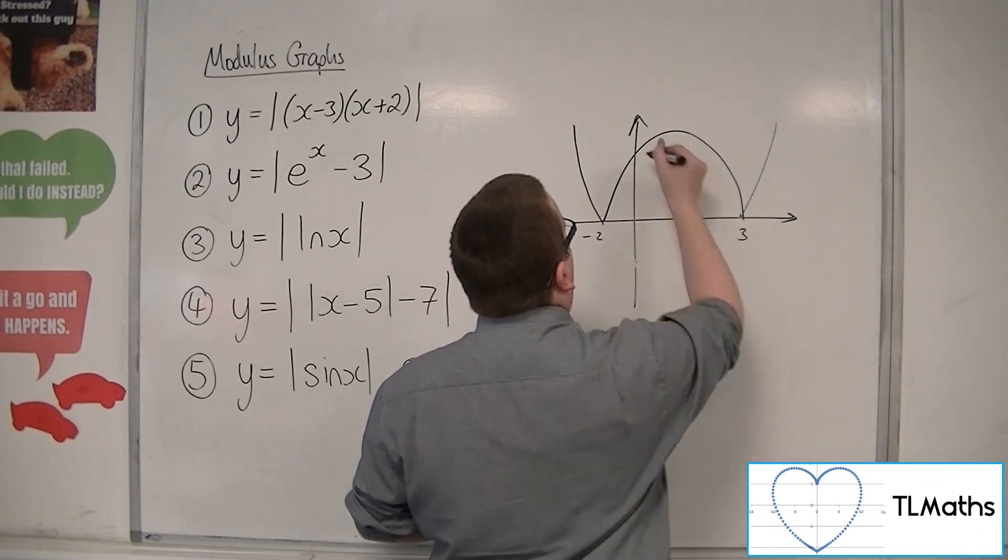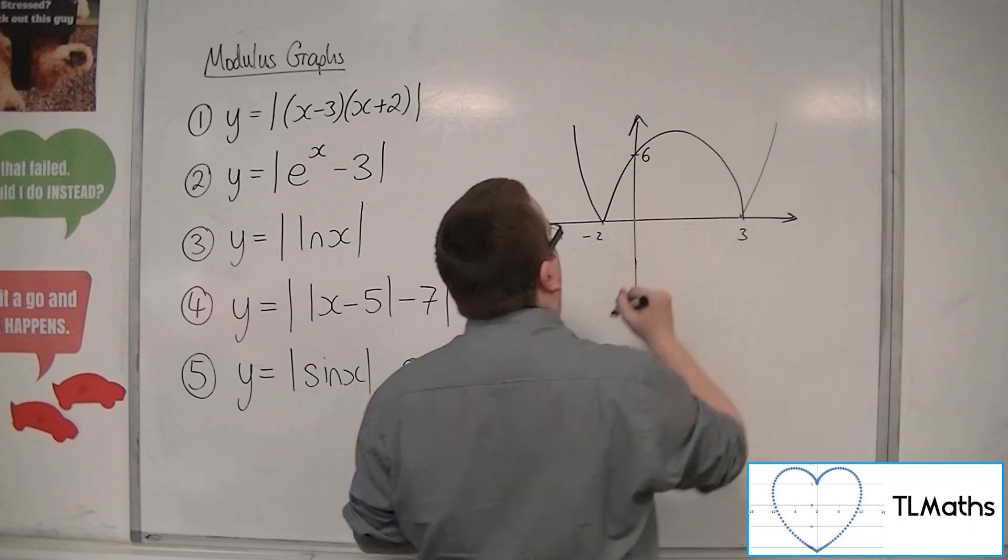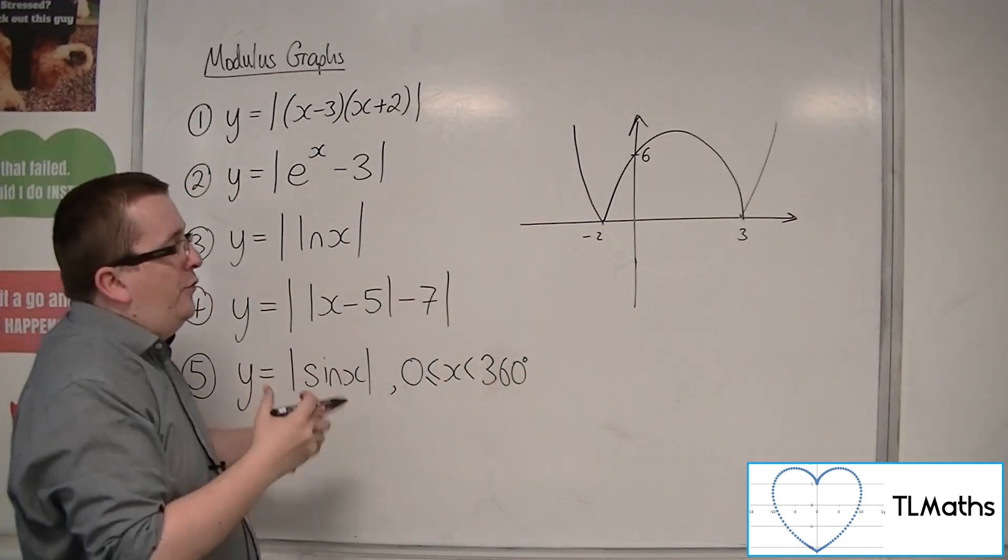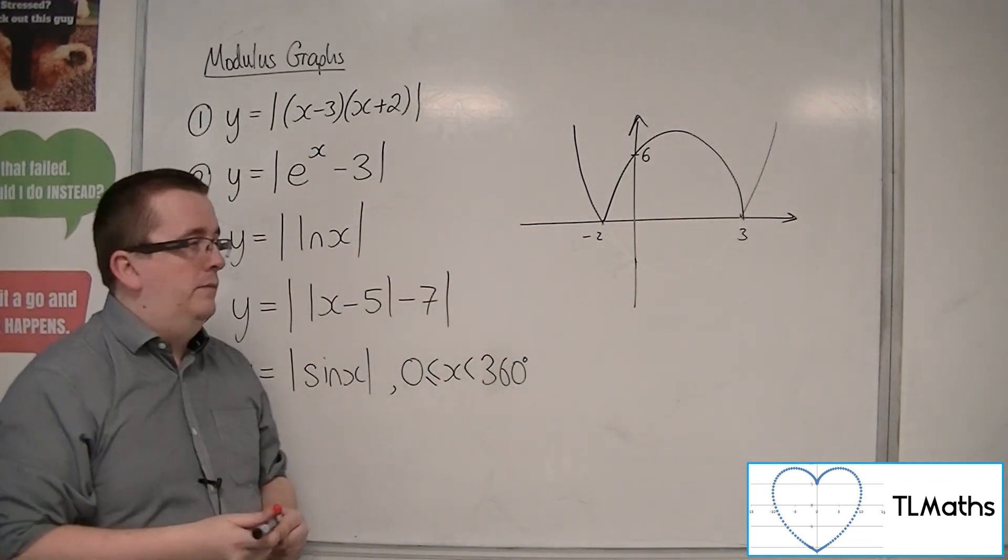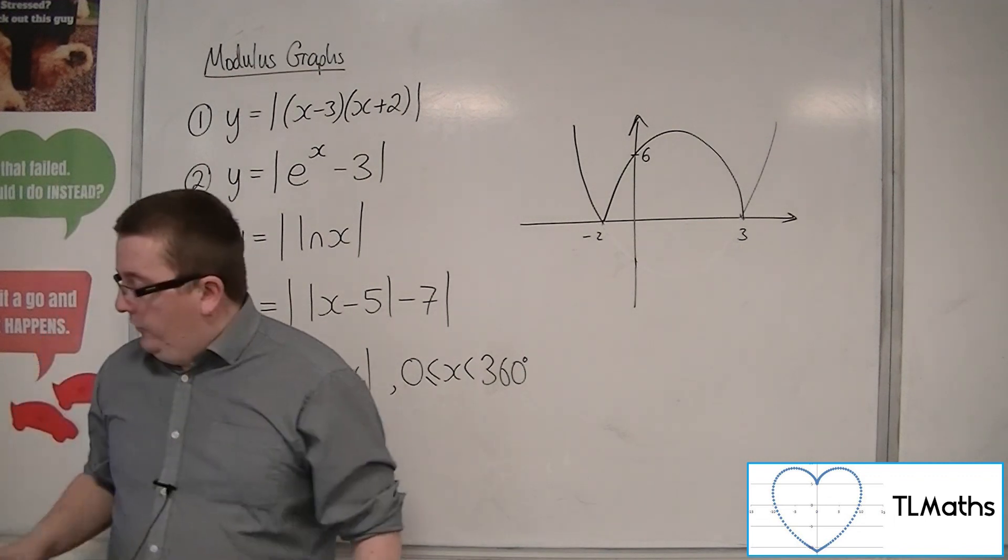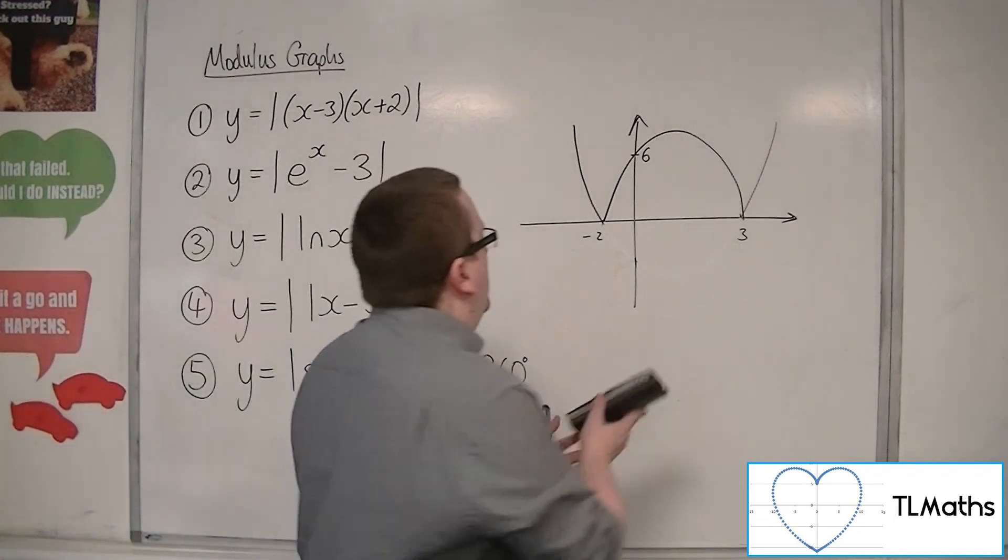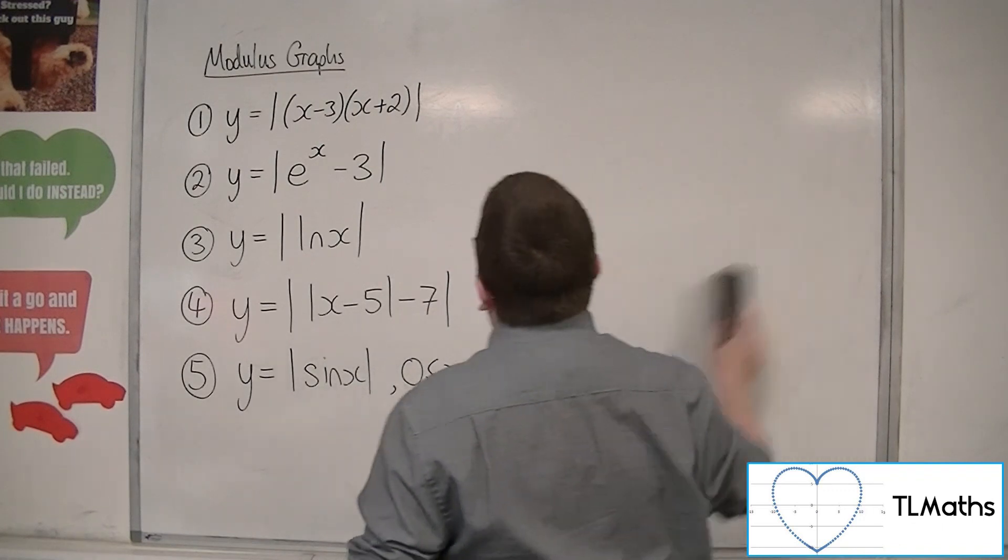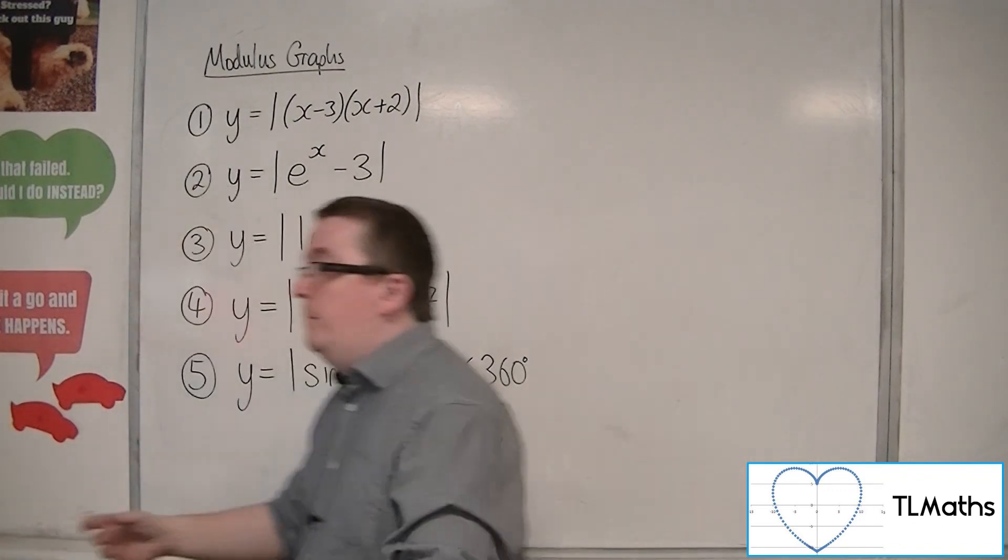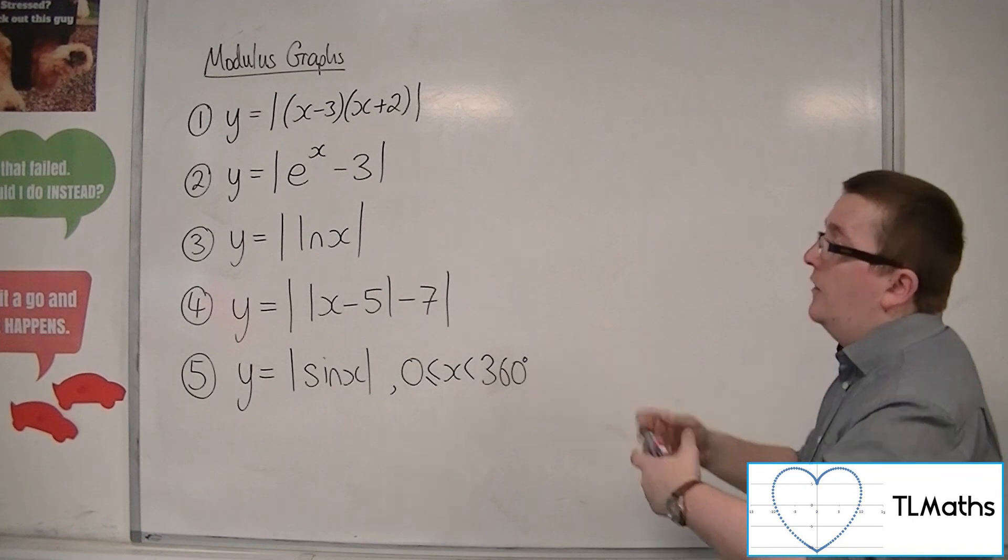So instead it would be going through 6 on the y-axis, not minus 6, and this would be the shape of your graph. So really it's drawing the original graph, thinking about what that looks like, and then reflecting whatever appears below the x-axis in the x-axis.